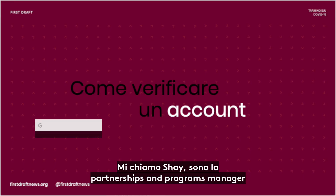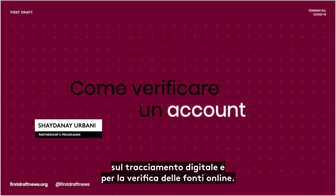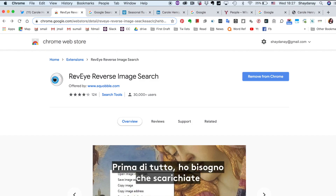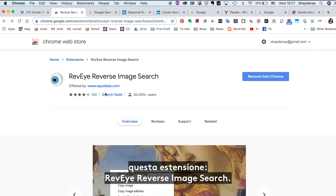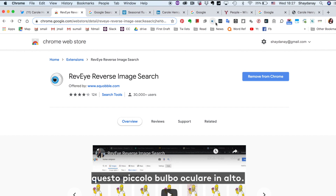Hey everyone, my name is Shea. I'm the Partnerships and Programs Manager for First Draft in New York City, and I'm going to show you some basic techniques for digital footprinting and verifying sources online. First things first, I need everyone to download this extension, Rev-Eye Reverse Image Search. You can get it in the Chrome Web Store, and when you install it, it should appear as this little eyeball up top.